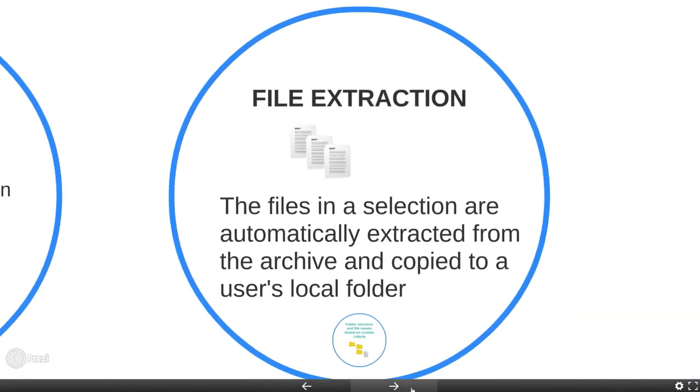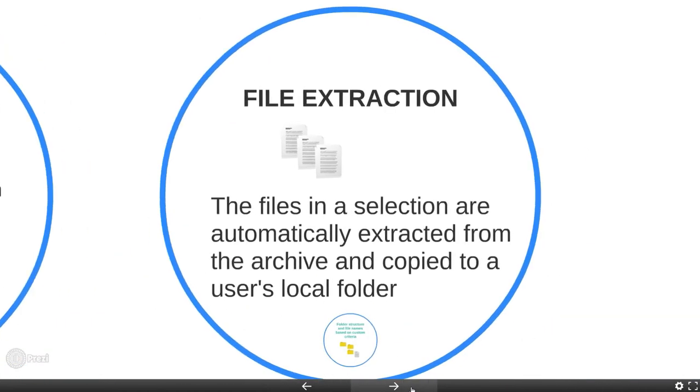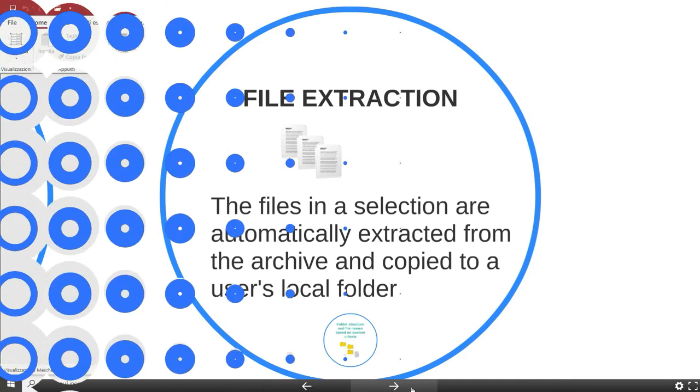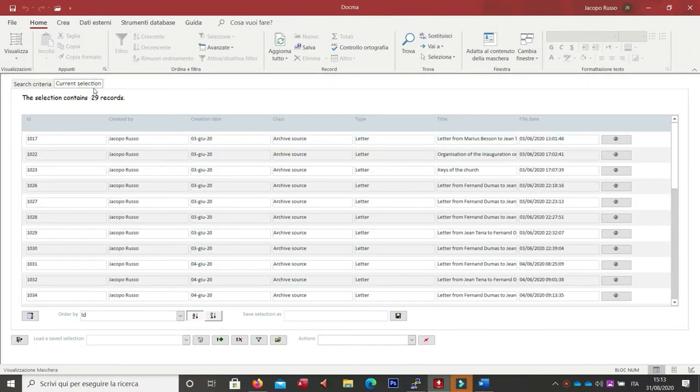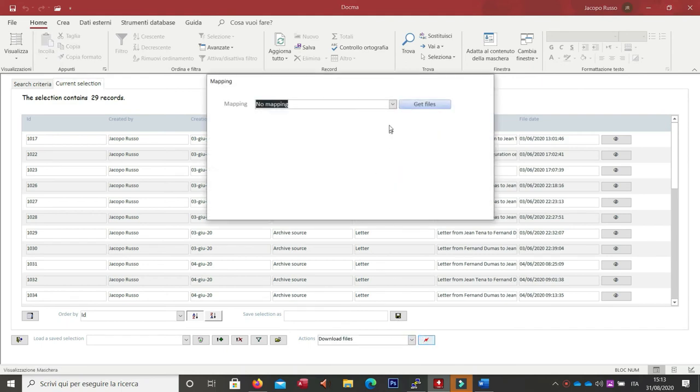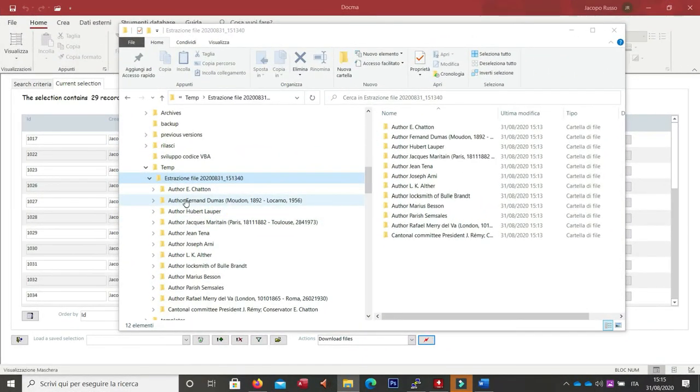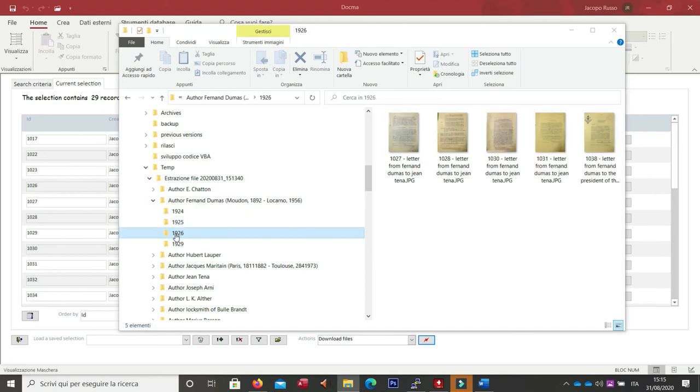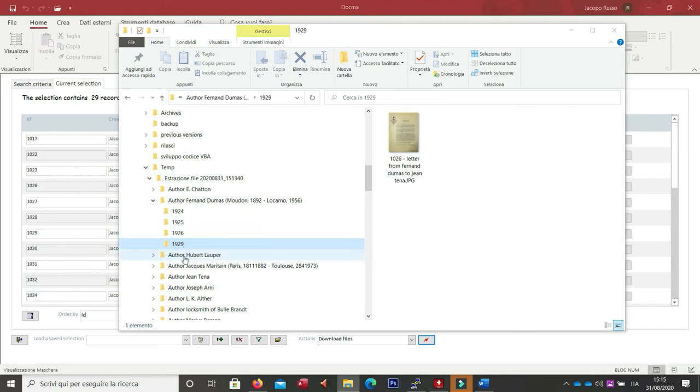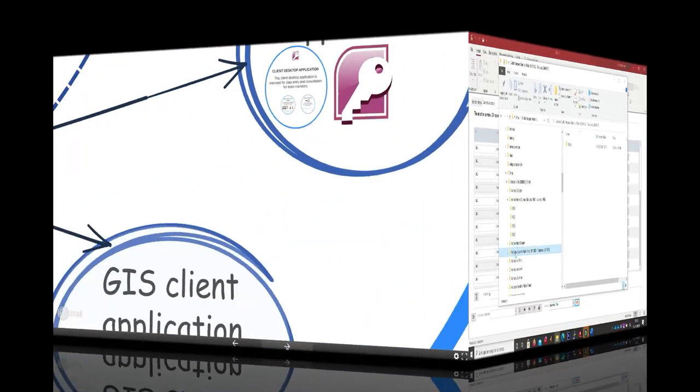When searching for files, it is possible to automatically extract selected files from the archive. The files are copied to the user working folder and organized automatically in folders and subfolders based on the data sheet contents. When querying the database, each user can define his own styles for the creation of folders and the file naming. It is not necessary to think about this in advance.